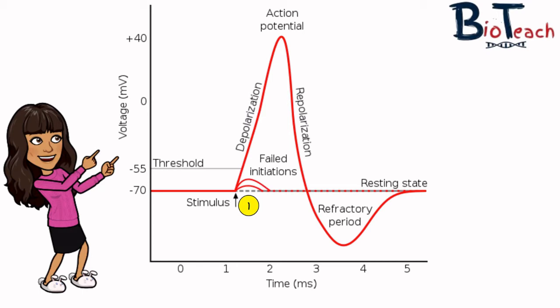We call this the all-or-nothing principle. The 'all' part states that once the threshold is reached, the action potential will always be generated to reach the maximum potential of plus 40 millivolts. But if it does not reach the threshold, then there is no response at all — that is the 'nothing' part.